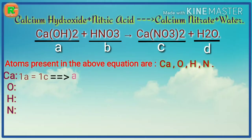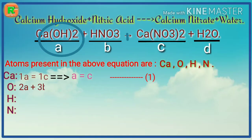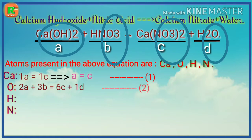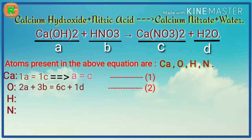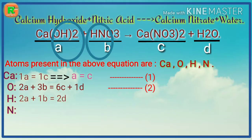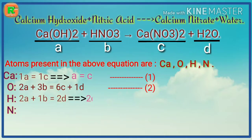That is, A = C — call this equation 1. For oxygen, there are two atoms in A and three atoms in B on the left side, equal to six atoms in C and one atom in D on the right side — equation 2. For hydrogen, there are two atoms in A and one atom in B on the left side, equal to two atoms in D on the right side, giving 2D = 2A + B — equation 3.